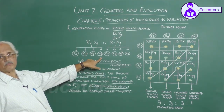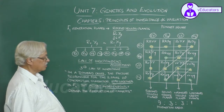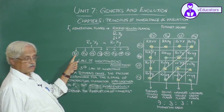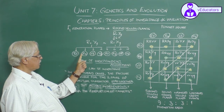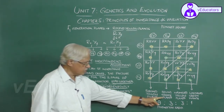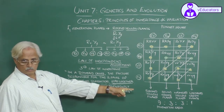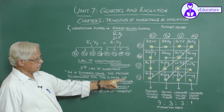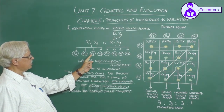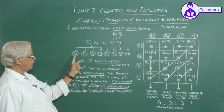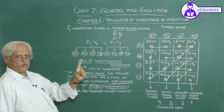When you look at the gametes itself, you will realize why and how two new combinations have occurred. Gamete RY suggests round yellow; gamete Ry suggests round green; gamete rY suggests wrinkled yellow; and gamete ry suggests wrinkled green. So assortment has already taken place during the formation of gametes. These are the parental combination gametes, and these are the gametes responsible for new combinations.